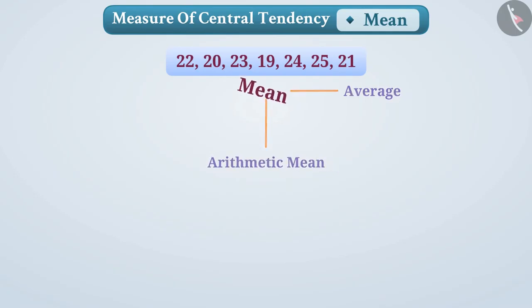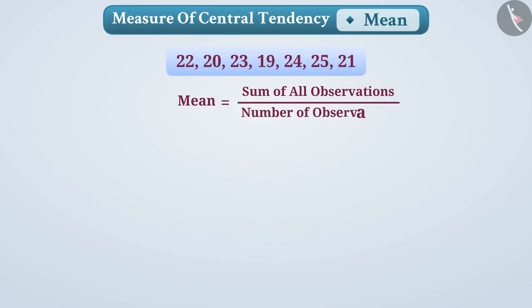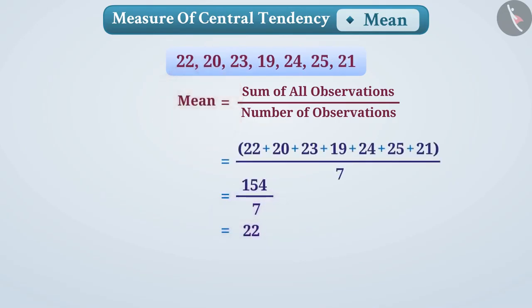The mean of observations of a group is the number obtained by dividing the sum of all observations by the number of observations. For example, the mean of given data is 22. We represent mean as X bar and read it as X bar.